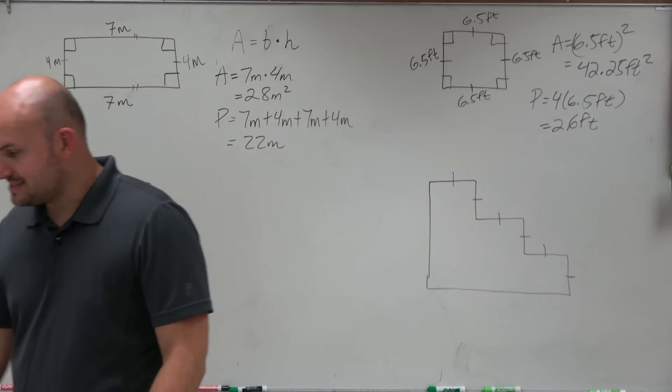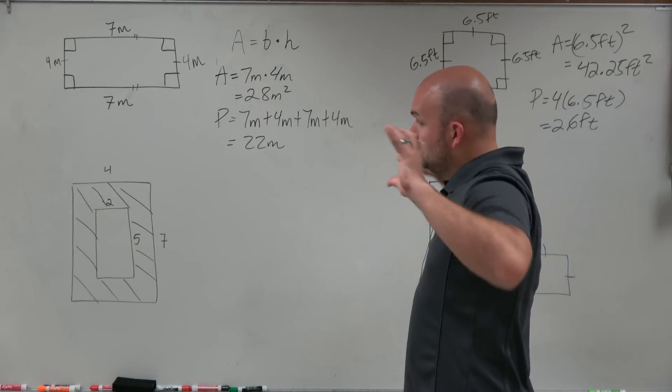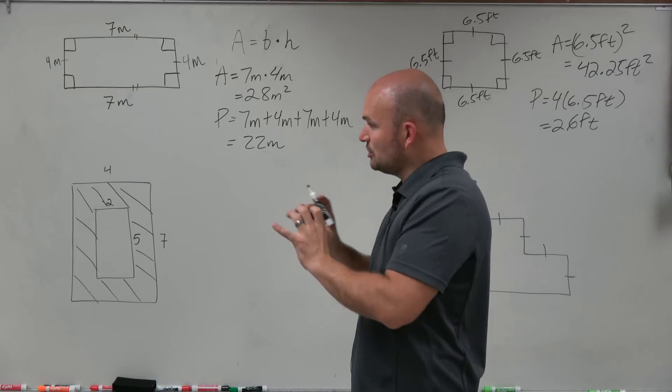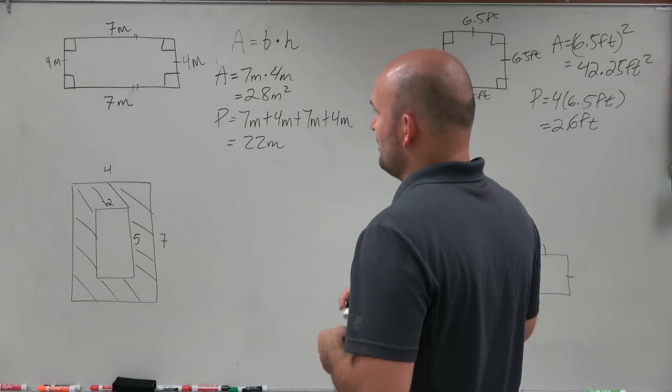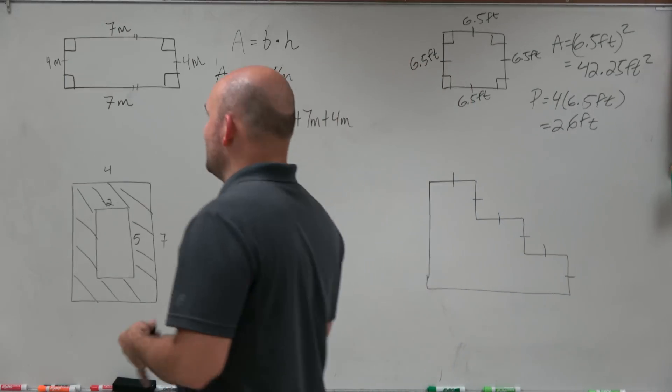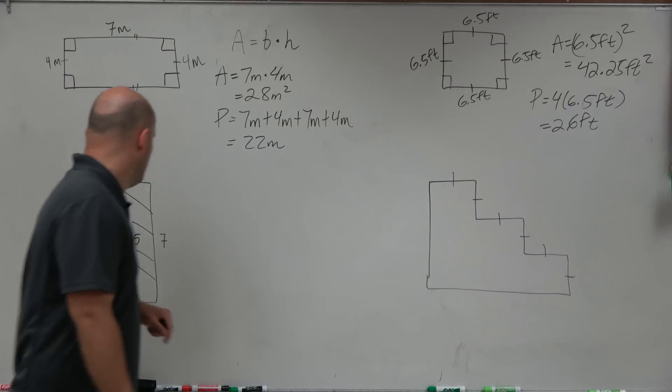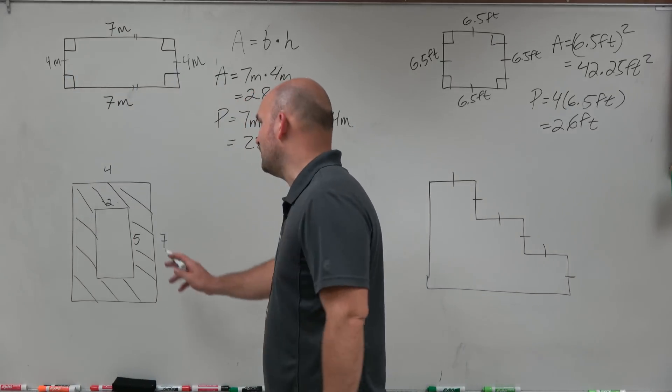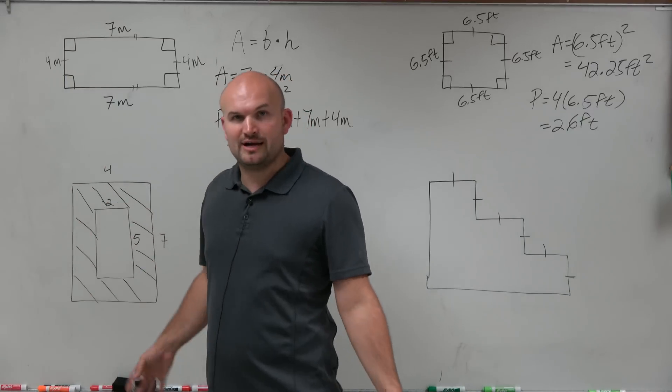Now in this case, in this example, what we have is we have a smaller square inside of a large square. Usually a lot of times we deal with a problem like this as a picture frame. Let's just pretend that's what that represents. So the shaded region is the picture frame. So what we want to do is determine how much area does that picture frame take up?